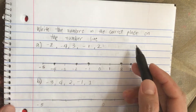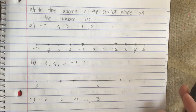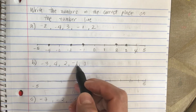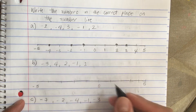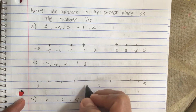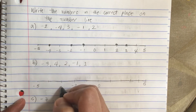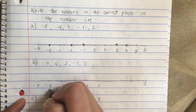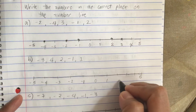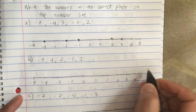So the next one we have minus 3, 4, 2, minus 1, and a 1. So again let's complete our number line. So minus 2, minus 3, minus 4, minus 5, and then 1, 2, 3, 4, and 5.